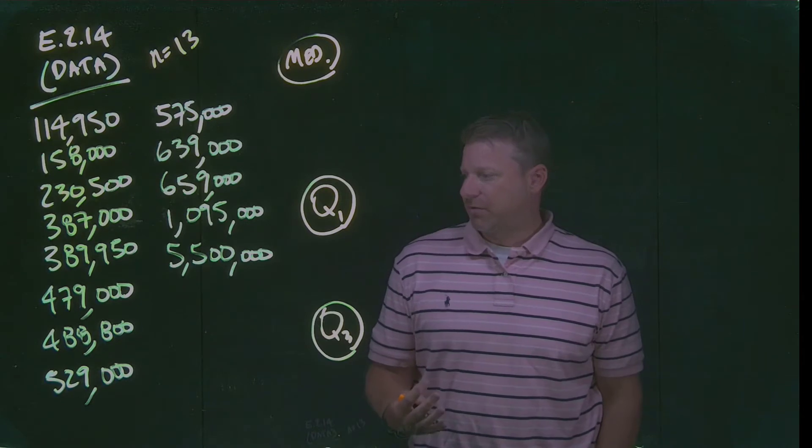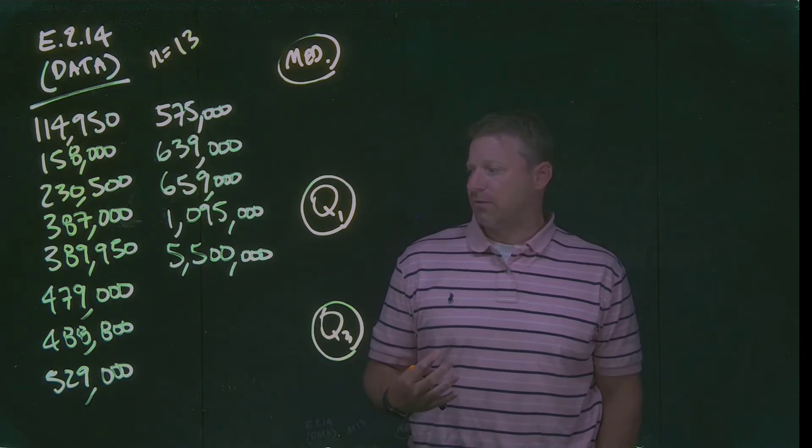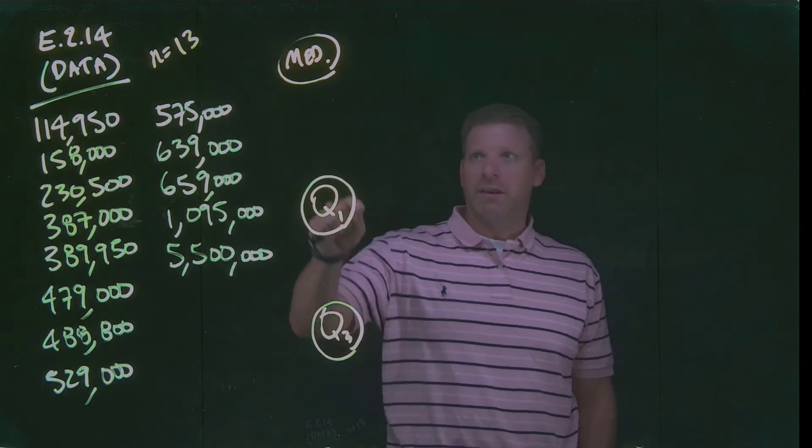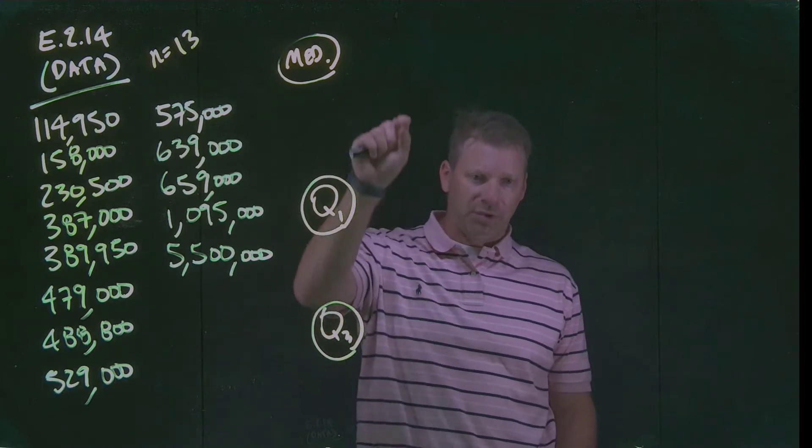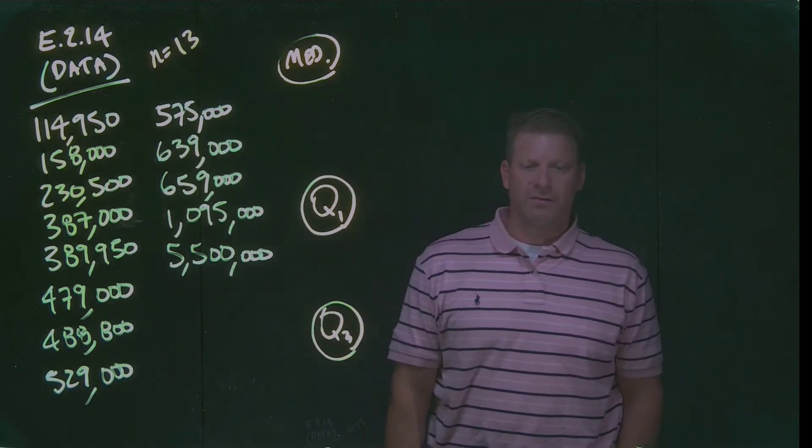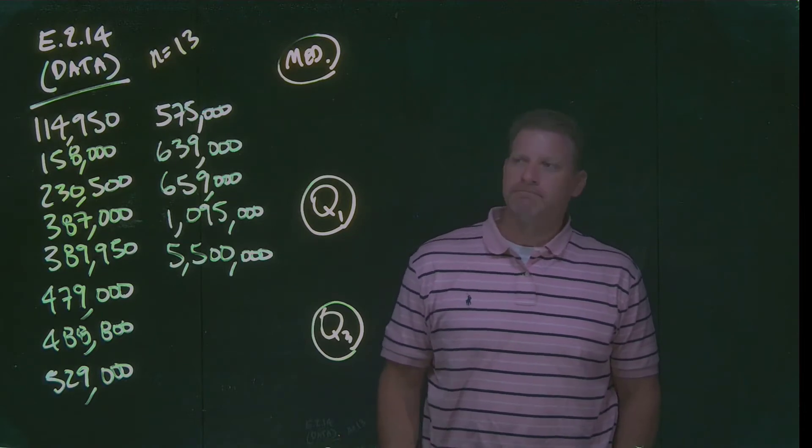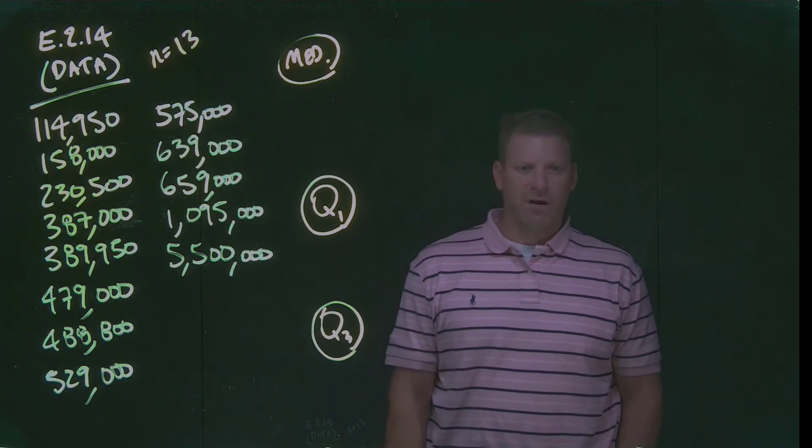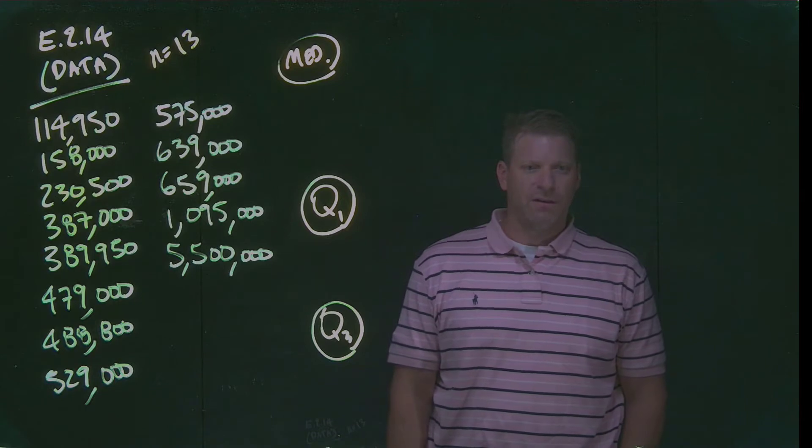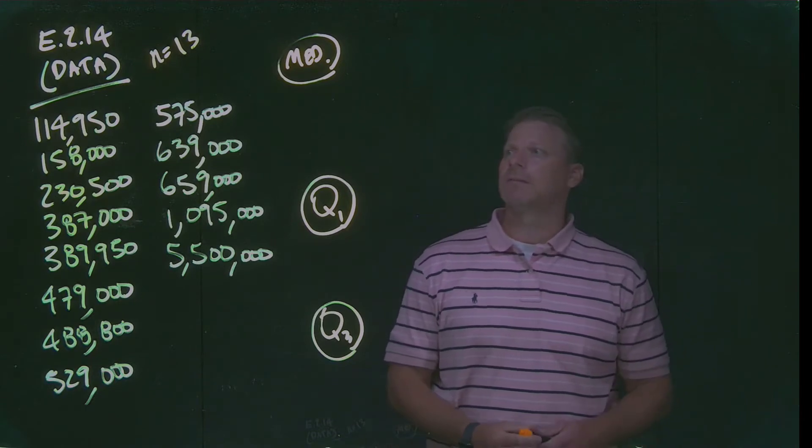We will get to the original question eventually. But for now, all I want to do is demonstrate exactly how we would go about calculating these three values. And then we will use these as a way to start to do this interquartile range. And along the way, then we can come up with a definition of an outlier. Even though I'm not a huge fan, it's kind of a common practice.